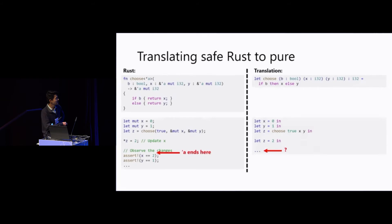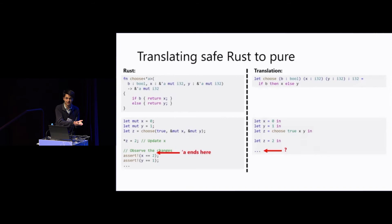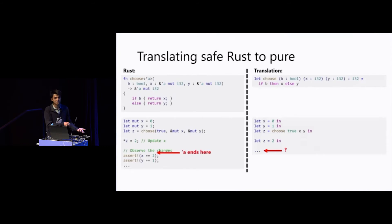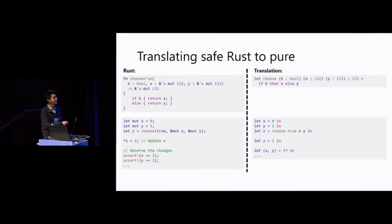Then comes the interesting point: we get access back to x and y, which ends the lifetime alpha. At this moment we observe the modifications that were made through z and propagate those changes back. Since the boolean is true, we returned x — so we updated x through z, and y is left unchanged. The new value for x is the last value of z, and y is unchanged.